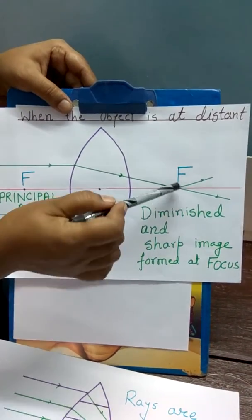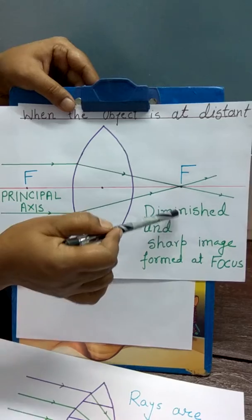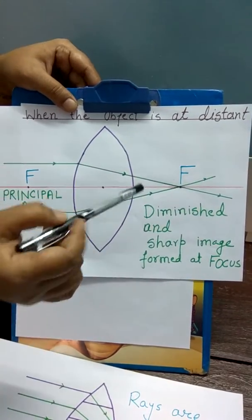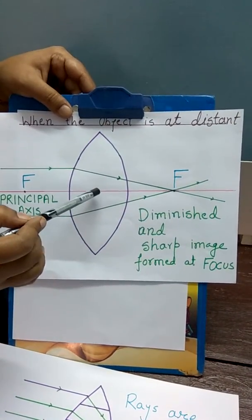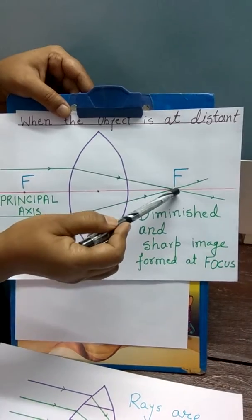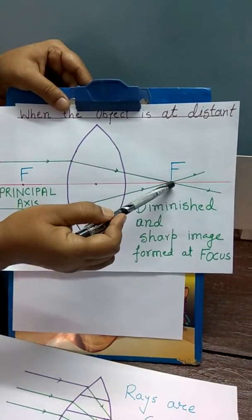At this point there will be a diminished, sharp and real image formed. The distance between the optical center and this point is known as focal length.